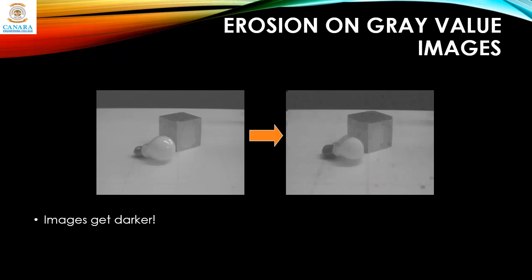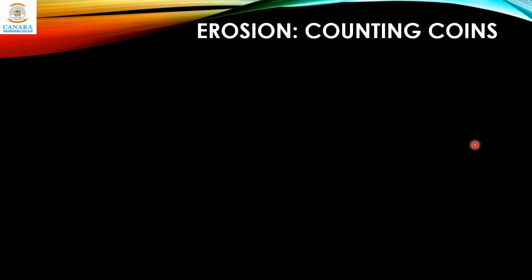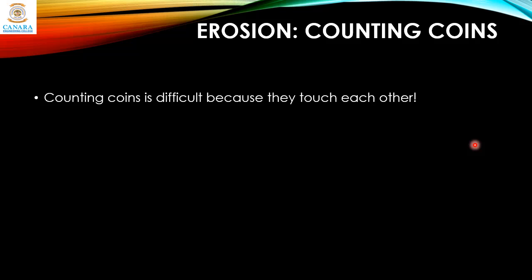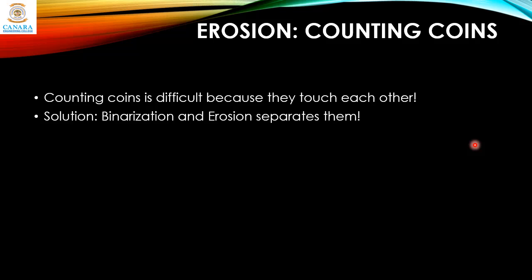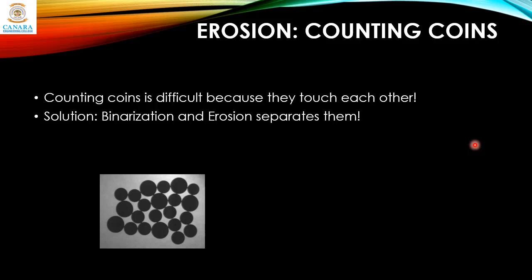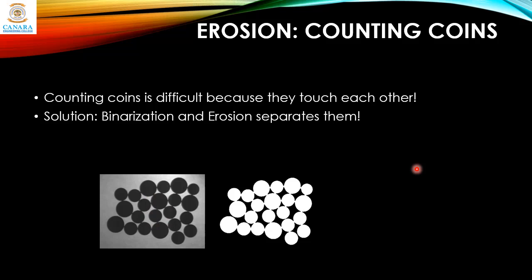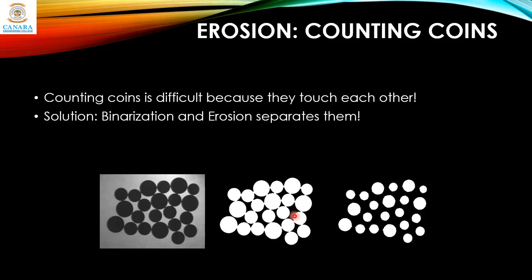One application of erosion is in counting coins. Counting coins is difficult because they often touch each other. The solution is to perform binarization — converting the grayscale image to a binary image with only ones and zeros — and then erosion to separate the coins. After erosion, you get distinct circles that are easier to count.